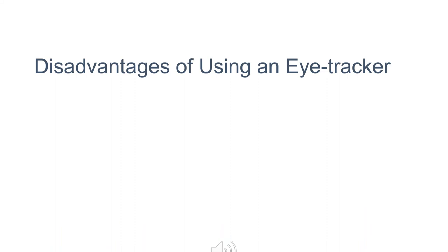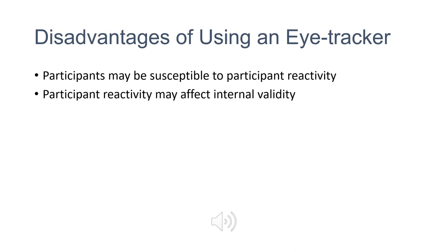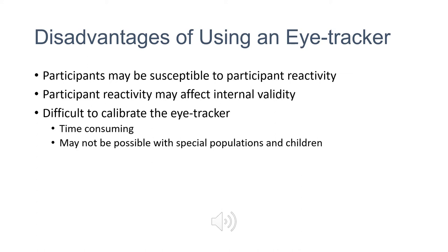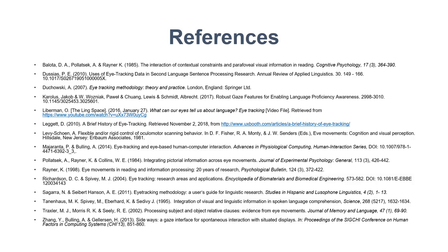An eye tracker does have some disadvantages. Participants may be susceptible to participant reactivity, as it's difficult to hide an eye tracker, and participant reactivity may affect internal validity. It's difficult to calibrate the eye tracker, which can be time consuming and may not even be possible with special populations and children. Older eye tracker models are uncomfortable and involve the participant staying in one position for an extended period of time. And some are very expensive, upwards of $10,000 or more.